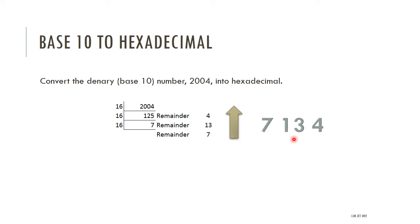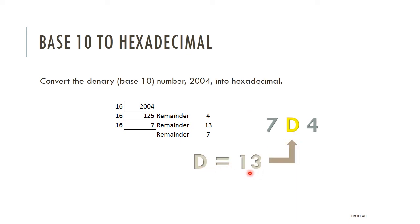The 7 and the 4 are fine — they are single digits. However, 13 is a double digit, so we need to do something about it. In hexadecimal, after 9 you have A, B, C, D — so 13 is represented by D. Replace your 13 with D, and your hexadecimal answer is 7D4.